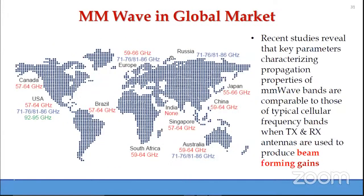The millimeter wave global market shows how millimeter wave has become popular with 5G, because with beamforming gains we can hold large transmitting and receiving antenna arrays and channel the entire energy into narrow beams, thereby achieving high directional antenna gain. In India, however, no millimeter wave has been allocated so far.